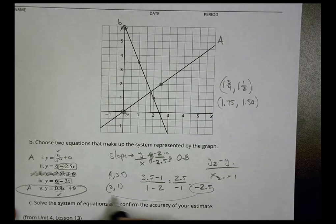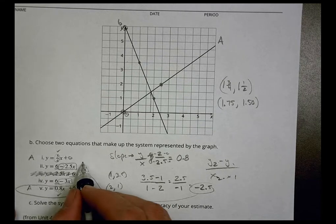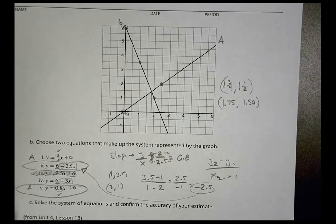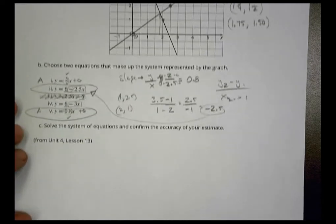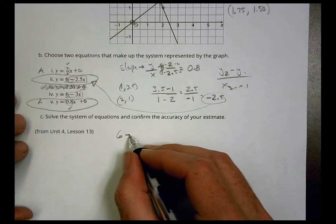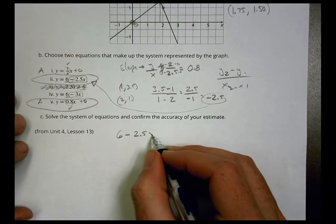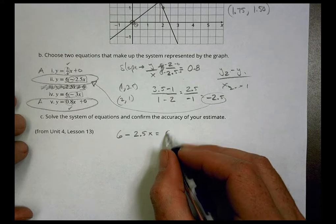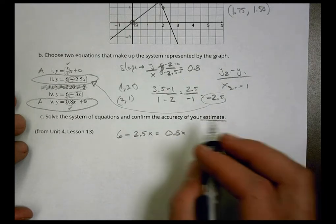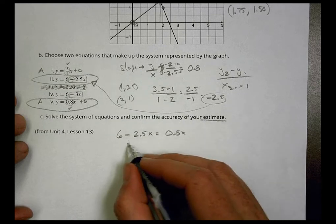It does say next to check this by solving to confirm. That means set them equal to each other. So we do 6 minus 2.5x equals 0.8x. And we're doing this to see how accurate our estimate was.